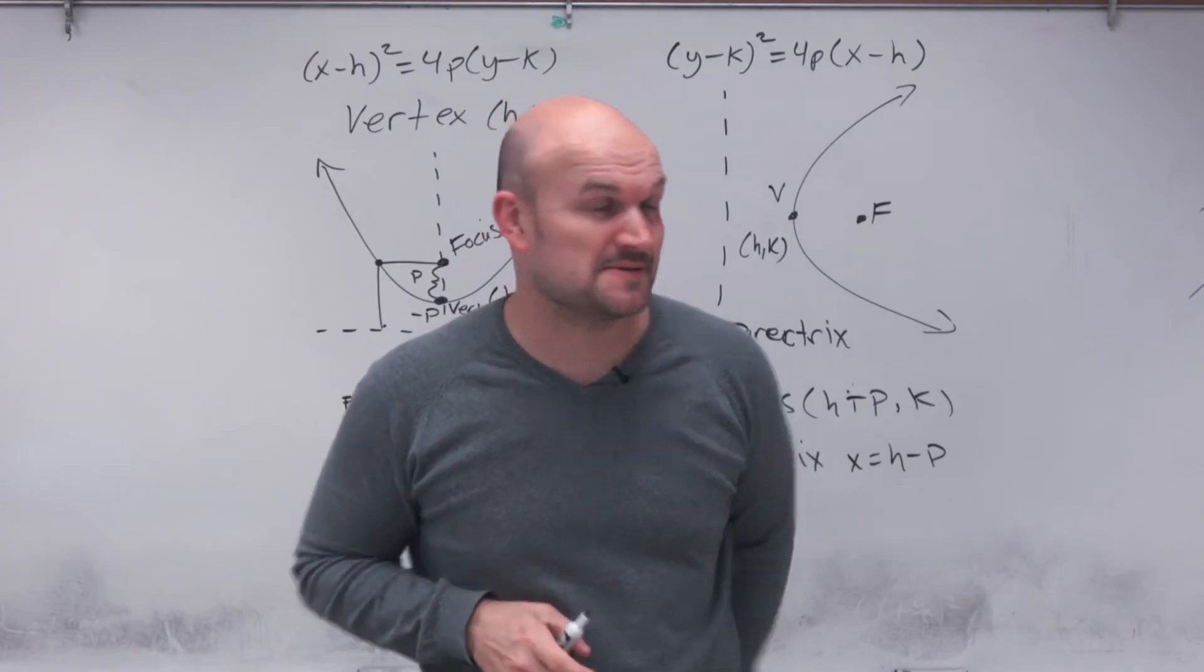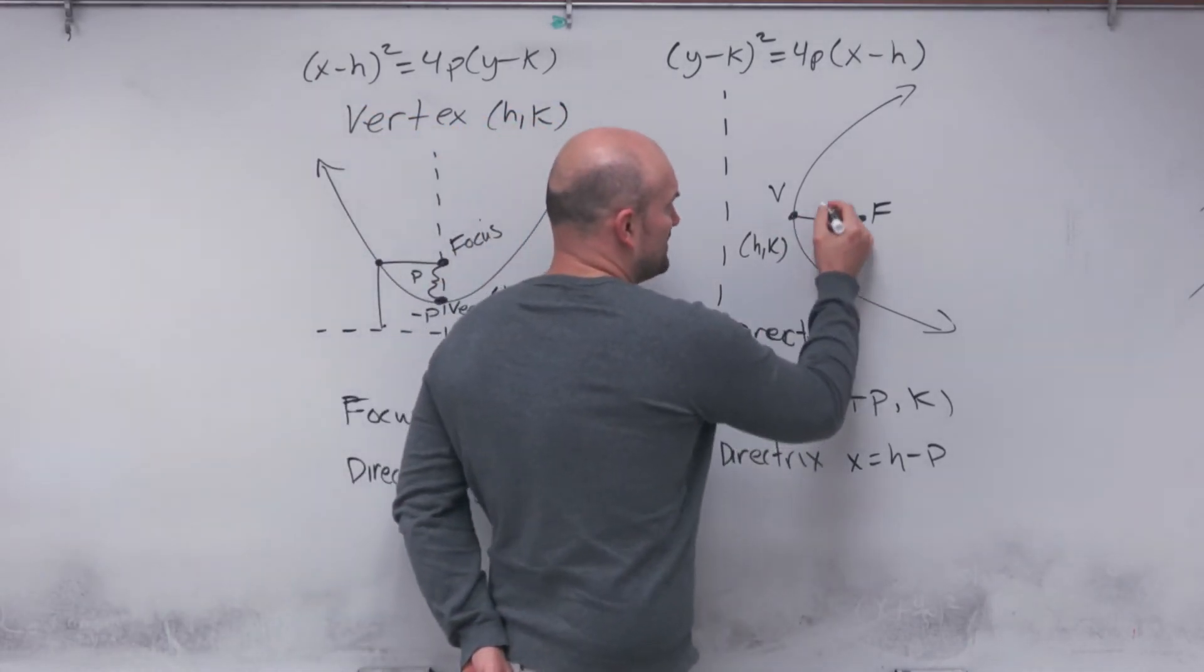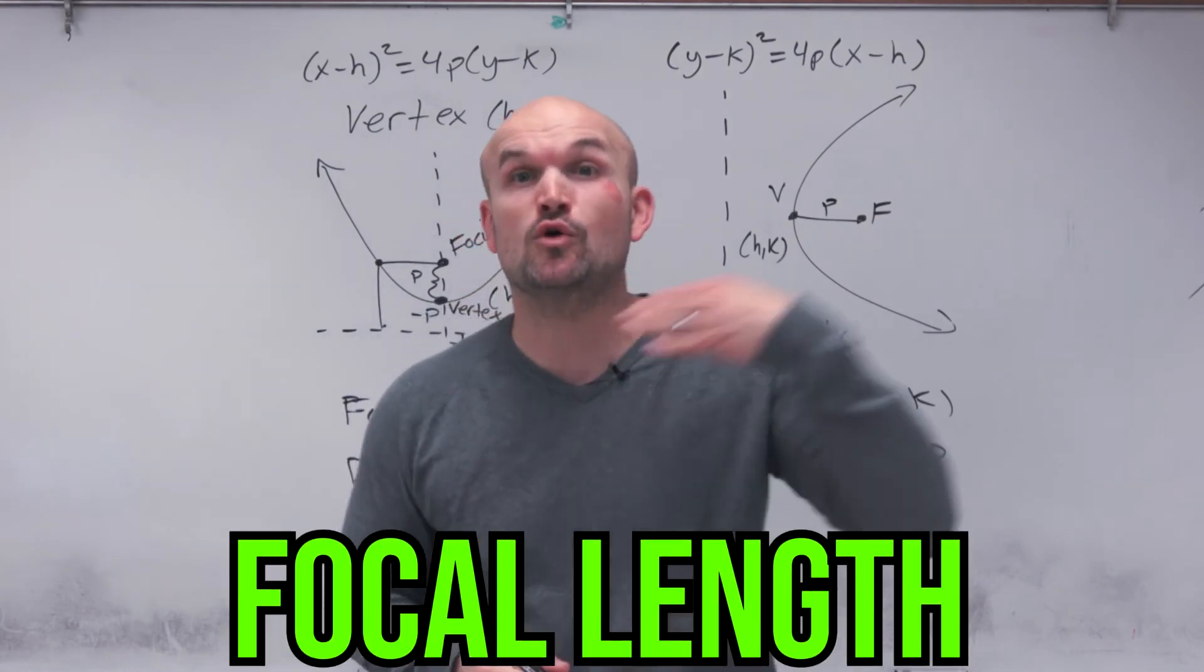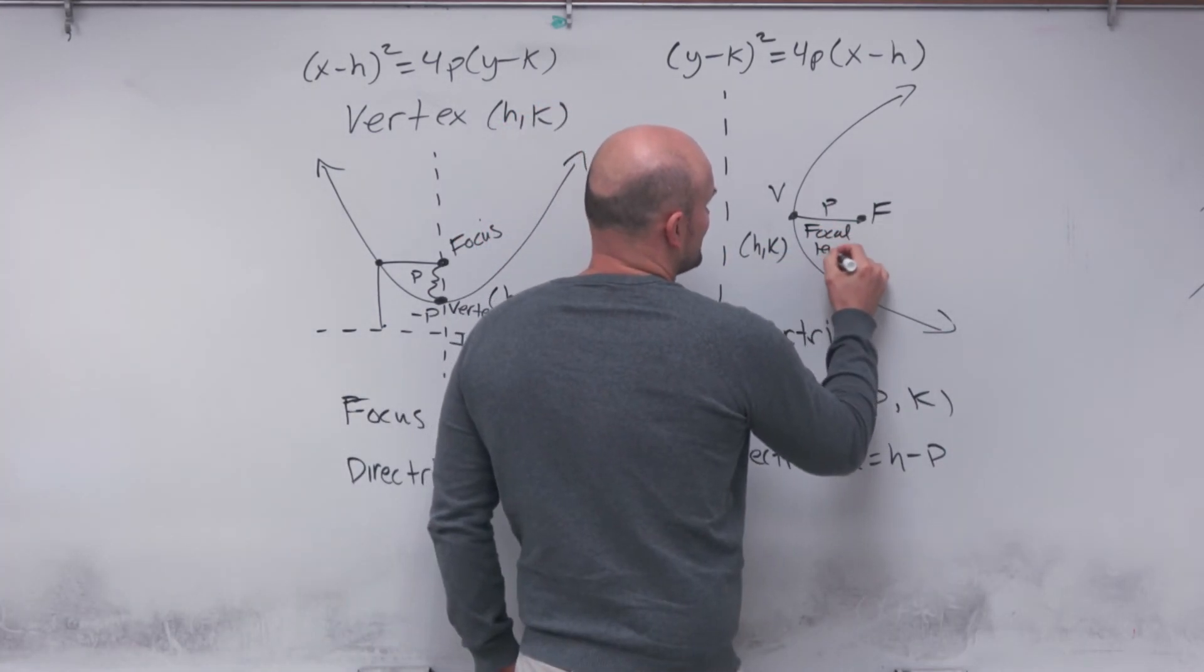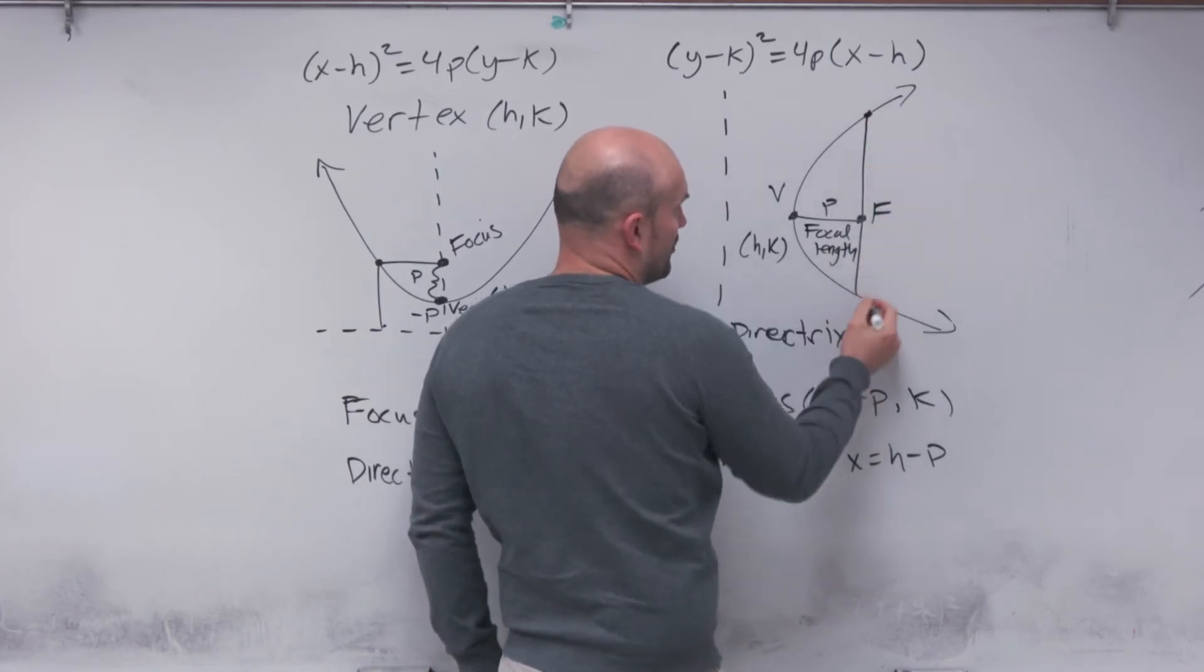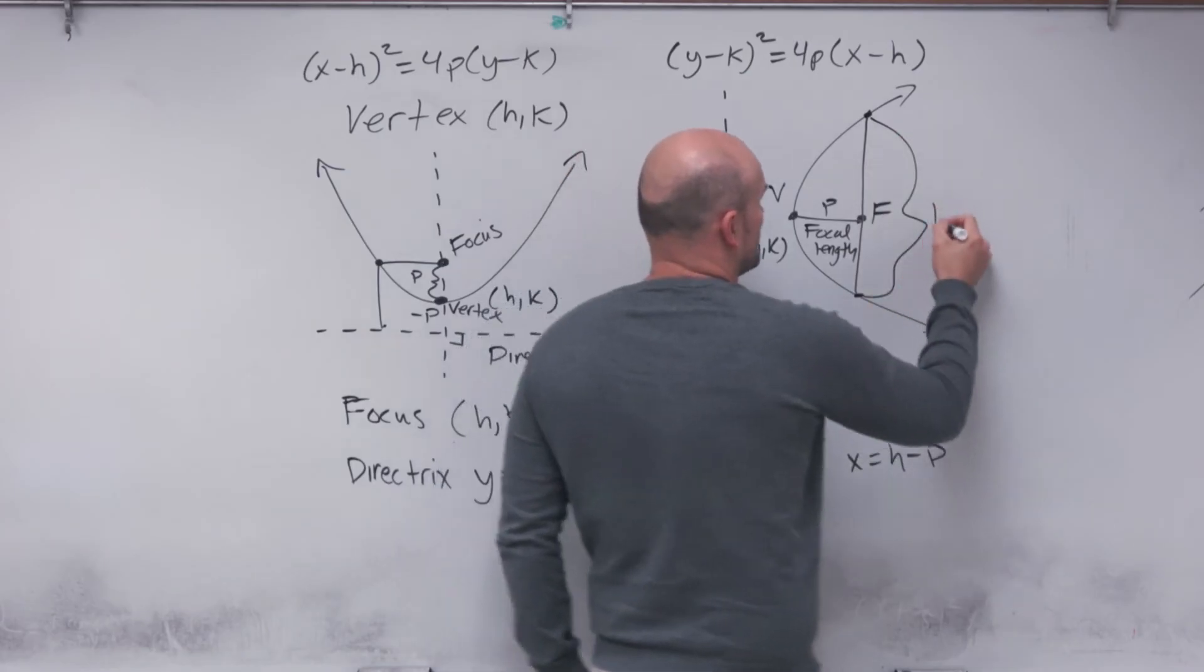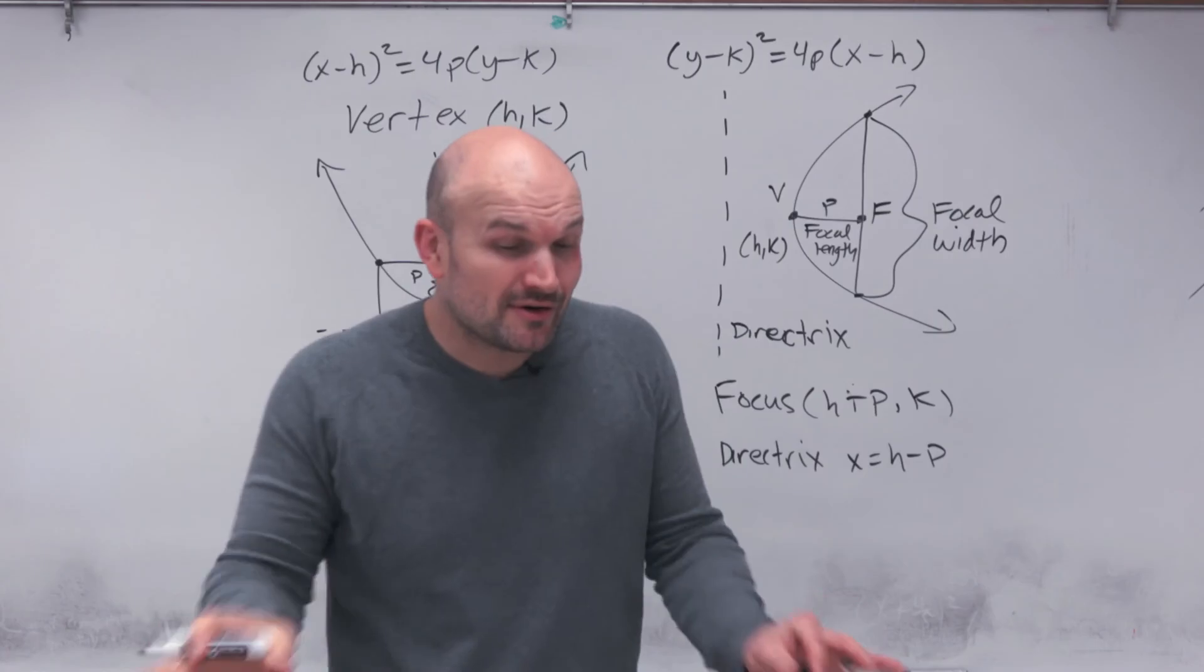There's two other things that we can talk about, some more definitions that we deal with. This P value is also what we call the focal length. If we're talking about this length, so this is called the focal length. And the distance from this point that goes through the focus, that's what we call our focal width.